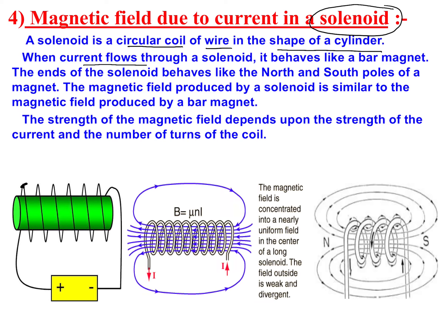When current flows through a solenoid, it behaves like a bar magnet. We have seen that whenever there is a flow of electric current in any conductor, it behaves like a magnet. The solenoid is no different from that.